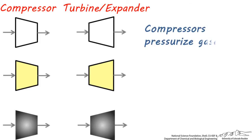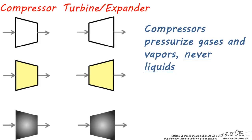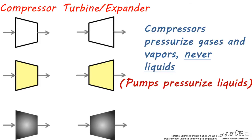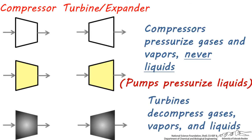It's important to remember that compressors only compress gases and vapors. Compressors are very expensive pieces of equipment, and sending a liquid through them will damage the rotors and stators. Remember that pumps are what we use to pressurize liquids. Turbines, on the other hand, decompress gases, vapors, and liquids.